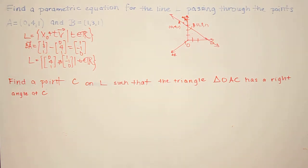Now say we want to find a point C on L such that the triangle OAC has a right angle at C, where O is the point (0, 0, 0) at the origin.